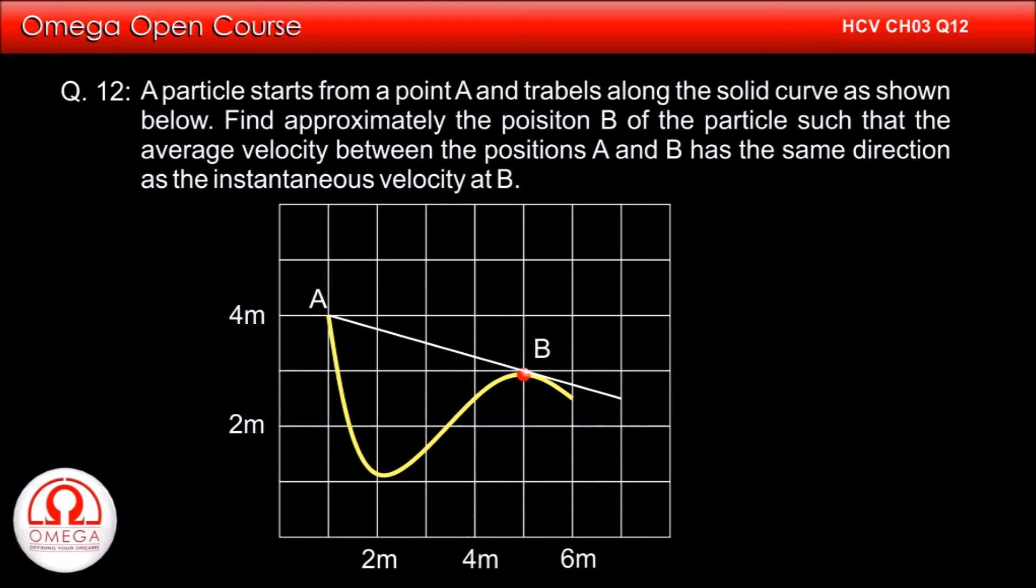As you can see, in this case, the chord and tangent both are same and therefore the direction of average and instantaneous velocity is same.